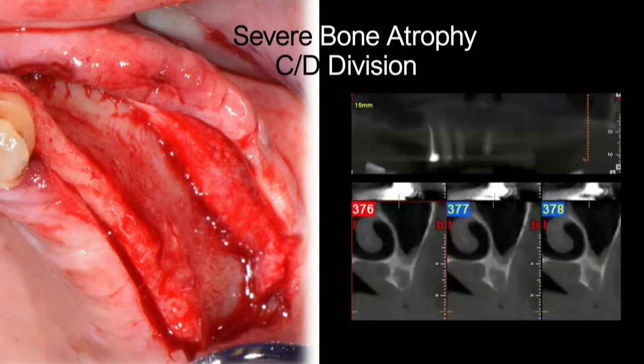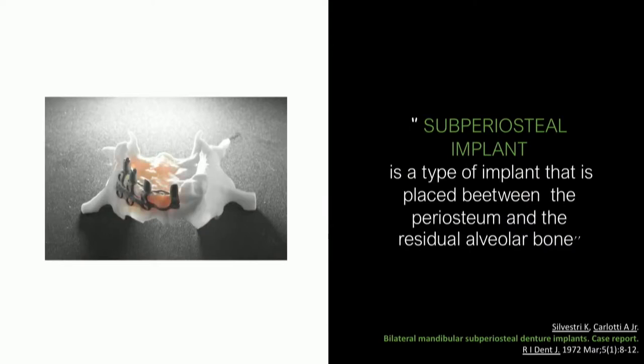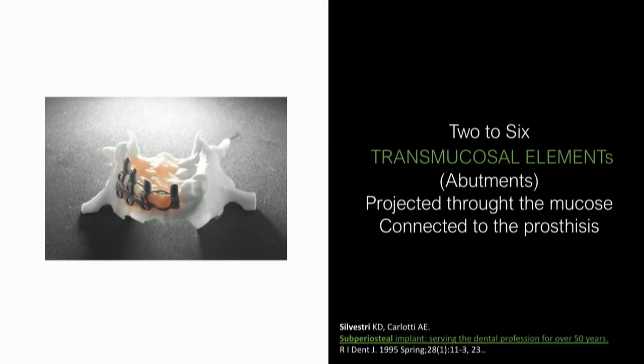For cases where short or narrow implants cannot be used, today we can use subperiosteal implants. A subperiosteal implant is placed between the periosteum and the residual alveolar bone. Two to six transmucosal elements — abutments — are projected through the mucosa and connected to the prosthesis, which is loaded immediately.